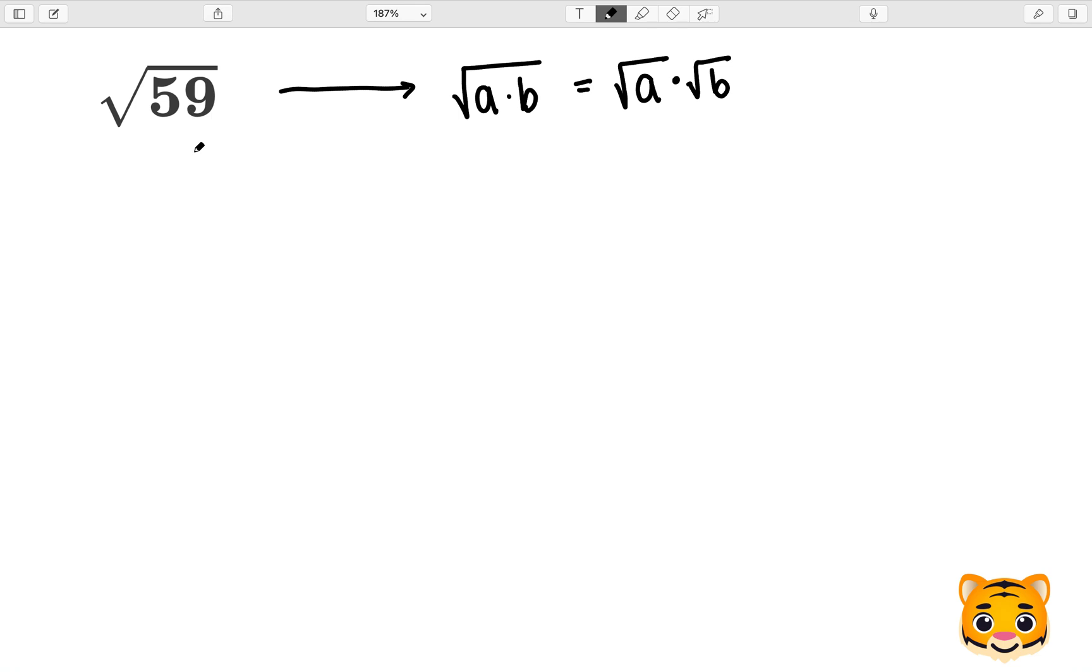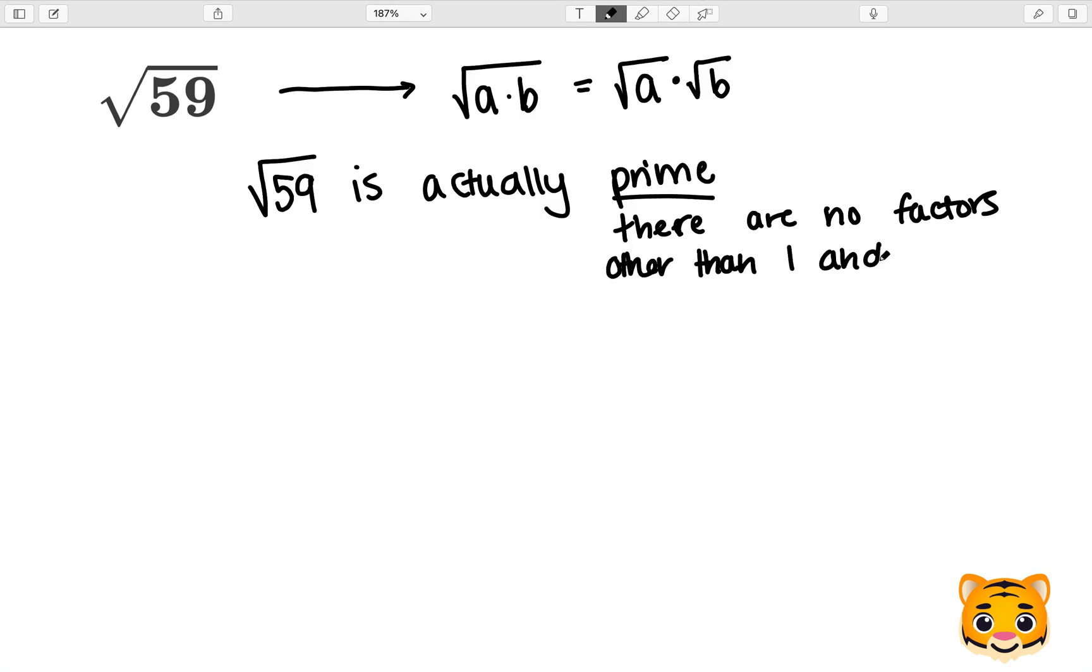Now we'll do the same thing with 59. First we need to consider if 59 has any possible factors. We can check and see that 59 is actually prime. This means that there are no factors other than 1 and 59.